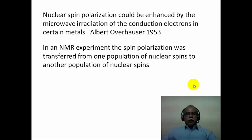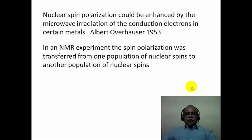The phenomenon of the nuclear Overhauser effect was discovered in 1953 by Albert Overhauser, hence the name Overhauser effect. He was studying metals and observed that the nuclear spin population could be enhanced by microwave radiation of the conduction electrons in certain metals. In other words, he was doing a double irradiation experiment—irradiating the electron spins using microwave radiation and simultaneously observing the nuclear spin polarization.